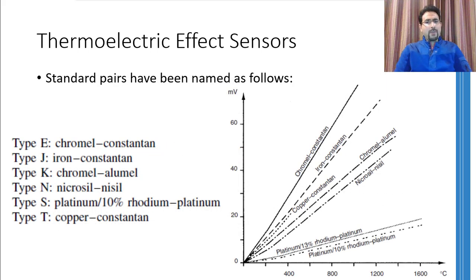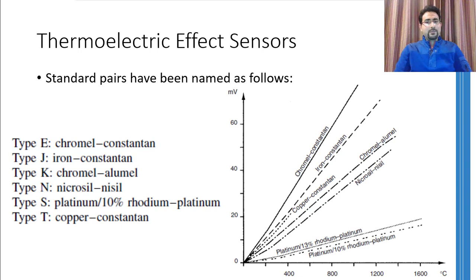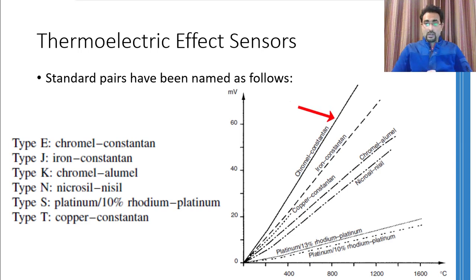This graph shows which metal or alloy combination will produce how much voltage at a particular temperature. Normally in the market, instead of naming the alloy or metal used, a type is defined. It has been standardized worldwide that type E means Chromel and Constantan alloy pair; similarly, types have been defined for other thermocouples as well. From this graph, you can see that type E thermocouples are the most sensitive but have the lowest sensing range, whereas type S thermocouples are the least sensitive and can measure the highest temperature.